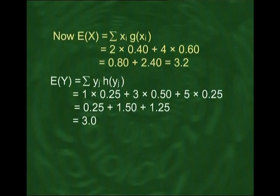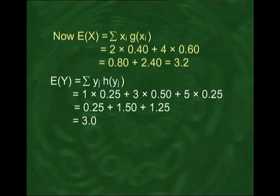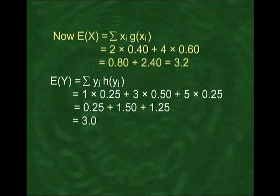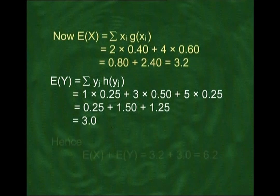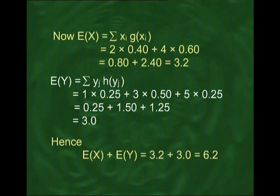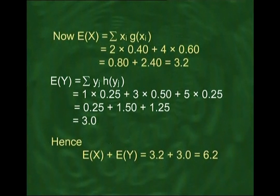Similarly, the expected value of Y is given by σ y·h(y). Multiplying the y values by their corresponding h(y) probabilities and summing, E(Y) comes out to be 3.0. Hence, E(X) + E(Y) = 3.2 + 3.0 = 6.2.